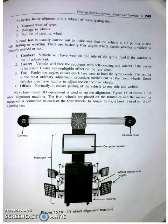Laser-based 3D equipment is now used to set all the alignment angles. The front wheels are placed on the turn table and the measuring equipment is connected to each of the four wheels. In simple terms, a laser is used to draw a perfect box.